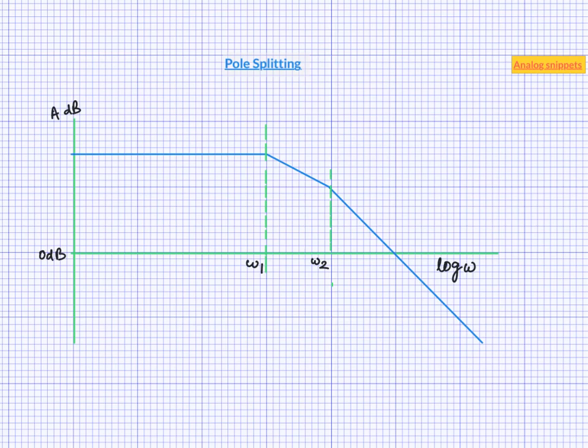A two pole uncompensated system looks something like this. After Miller compensation, pole splitting happens and we get this.